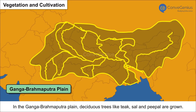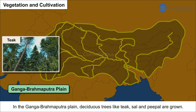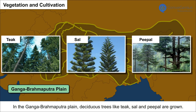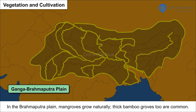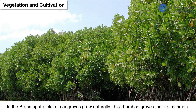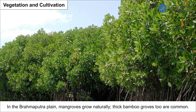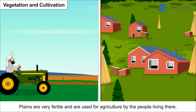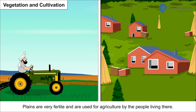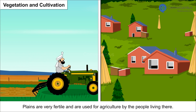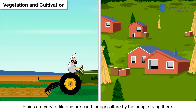In the Ganga Brahmaputra Plain, deciduous trees like teak, sal and peepal are grown. In the Brahmaputra Plain, mangroves grow naturally. Thick bamboo groves too are common.